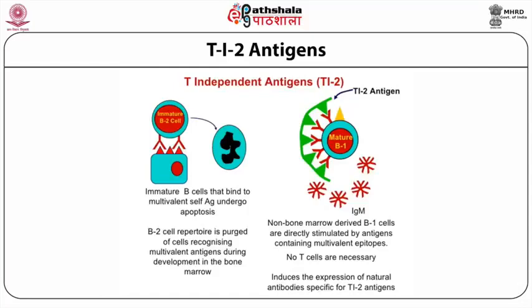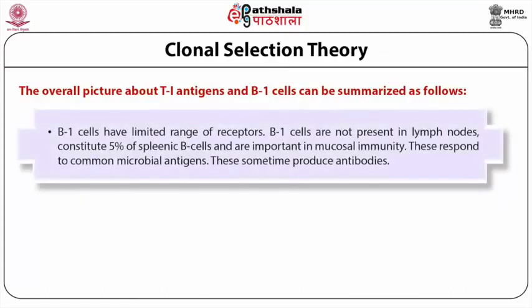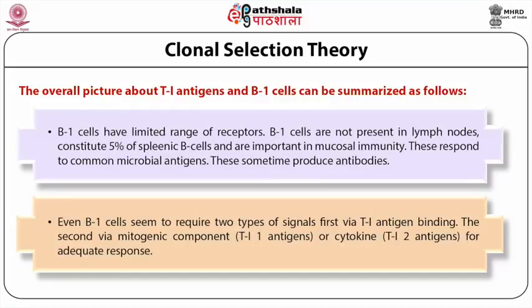The overall picture about TI antigens in B1 cells can be summarized as follows. B1 cells have a limited range of receptors; they are not present in lymph nodes, constitute 5% of splenic B cells, and are important in mucosal immunity. They respond to common microbial antigens and sometimes produce antibodies. Even B1 cells seem to require two types of signals: first via TI antigen binding, and second via mitogenic component — TI1 antigens or cytokines from TI2 antigens — for adequate response.